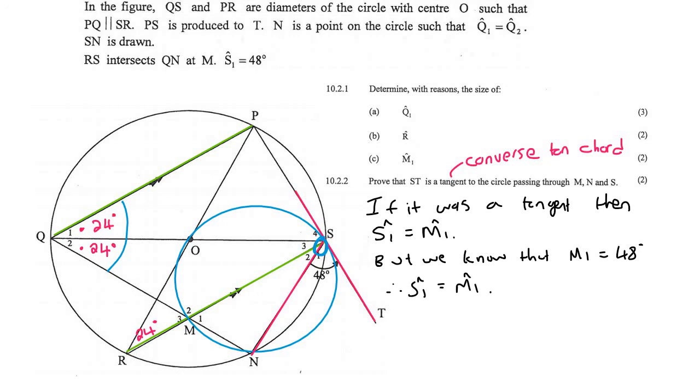So this means that this must be a tangent. So therefore, ST is a tangent because of the converse, which means the opposite of the tan chord theorem. And that's how you would do that.